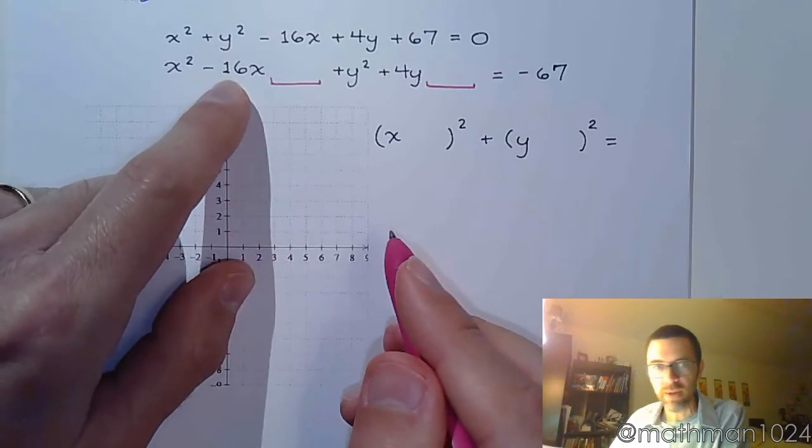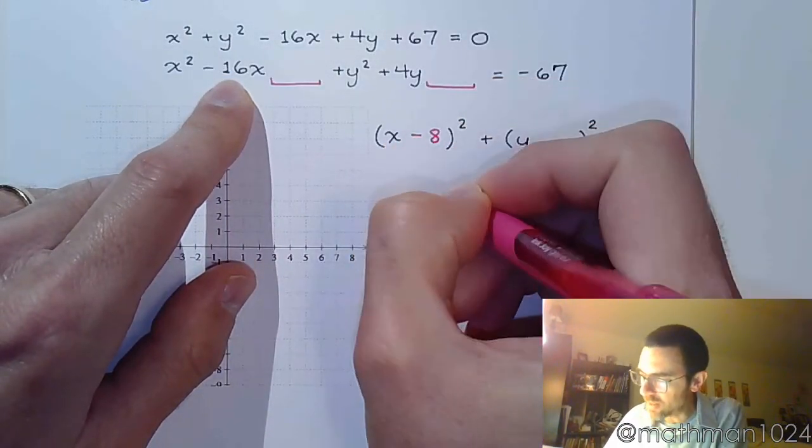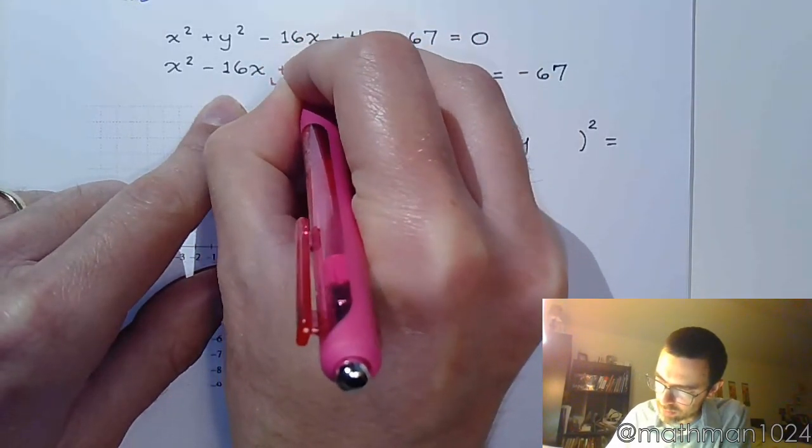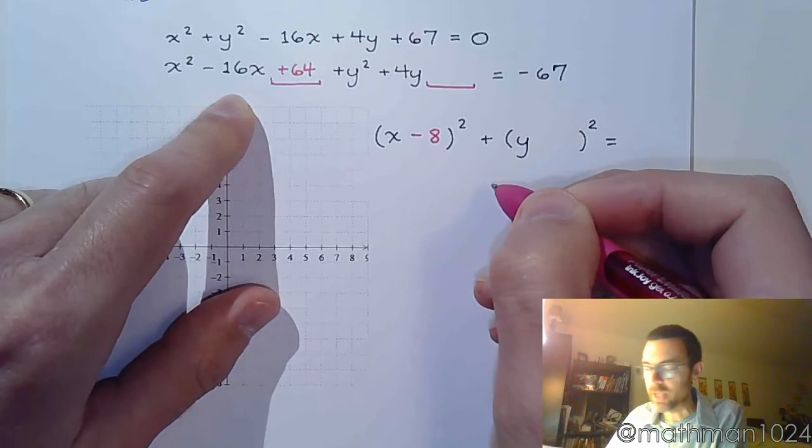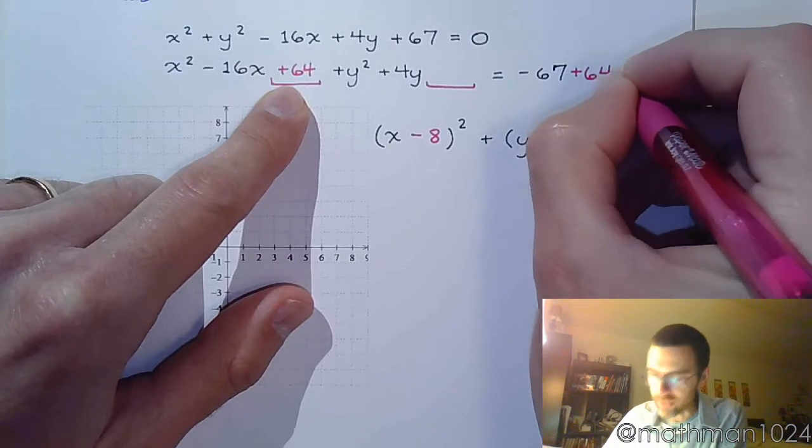So complete the square. Half of negative 16 is negative 8, and 8 squared is 64. So I was missing a 64 right here. And again, remember to maintain balance. If you add 64 here, you need to add 64 to the other side.